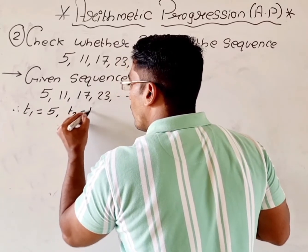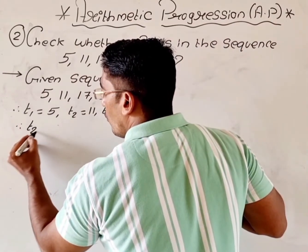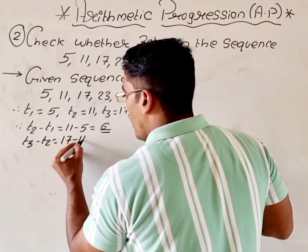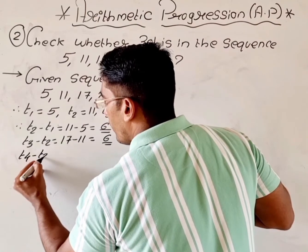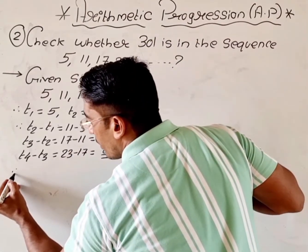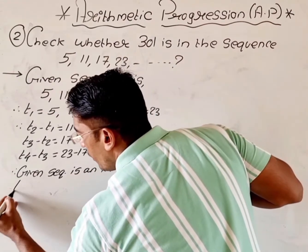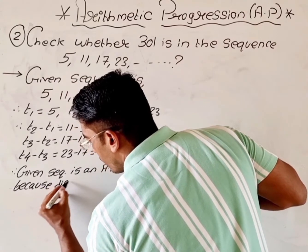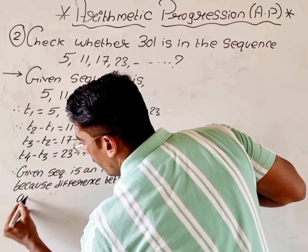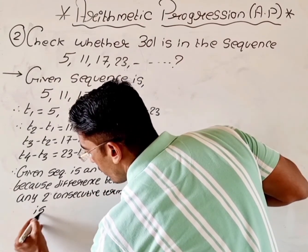T1 = 5, T2 = 11, T3 = 17, T4 = 23. Therefore T2 − T1 = 11 − 5 = 6. T3 − T2 = 17 − 11 = 6. T4 − T3 = 23 − 17 = 6. We got the same difference, so I can say that the given sequence is an AP. Therefore the given sequence is an AP, because the difference between any two consecutive terms is the same.